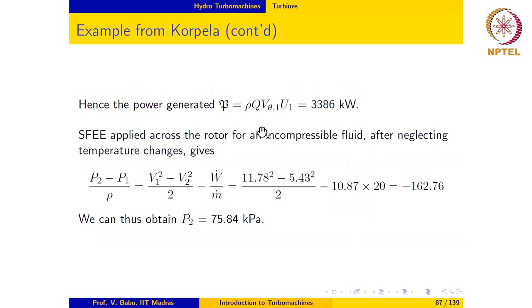Hence the power generated, that is the hydraulic power assuming no losses, is equal to ρ times Q times Vθ1 times U1, which gives us 3386 kilowatts.